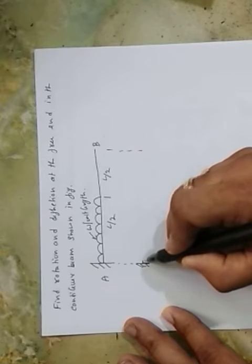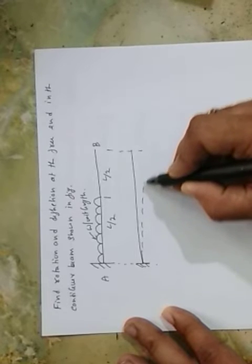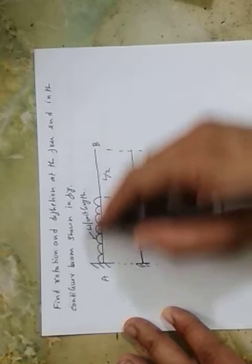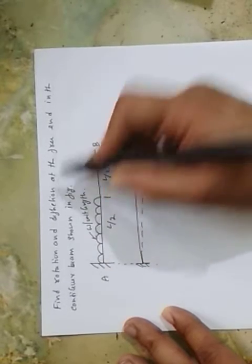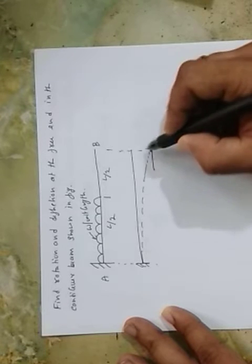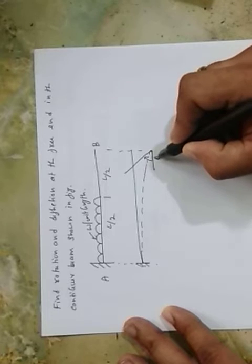be in the same fashion. So this is when the cantilever beam is loaded, it will deform in this manner. So we need the deflection at the free end. So at the free end, if I'm able to draw the tangent to the elastic curve, this is what is the slope theta B.